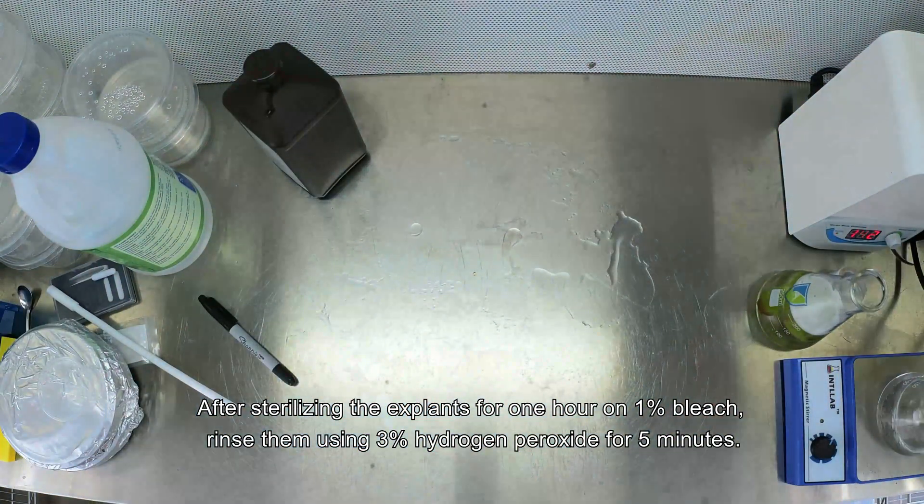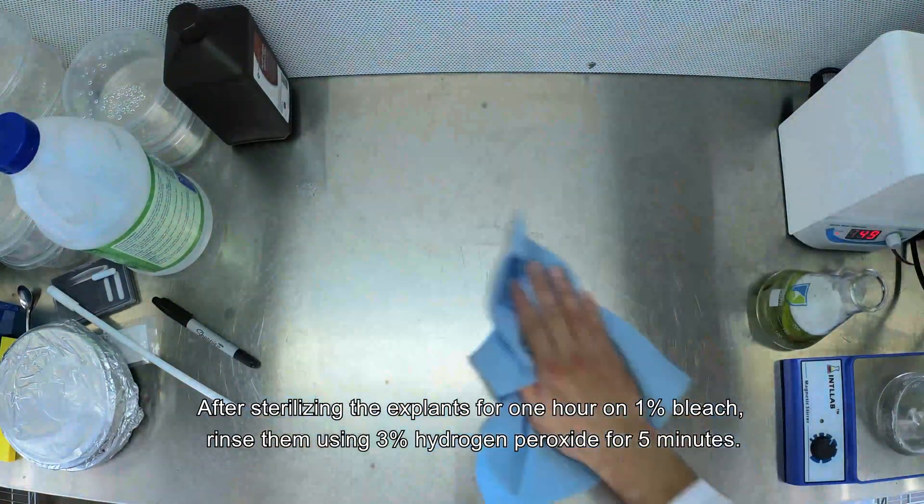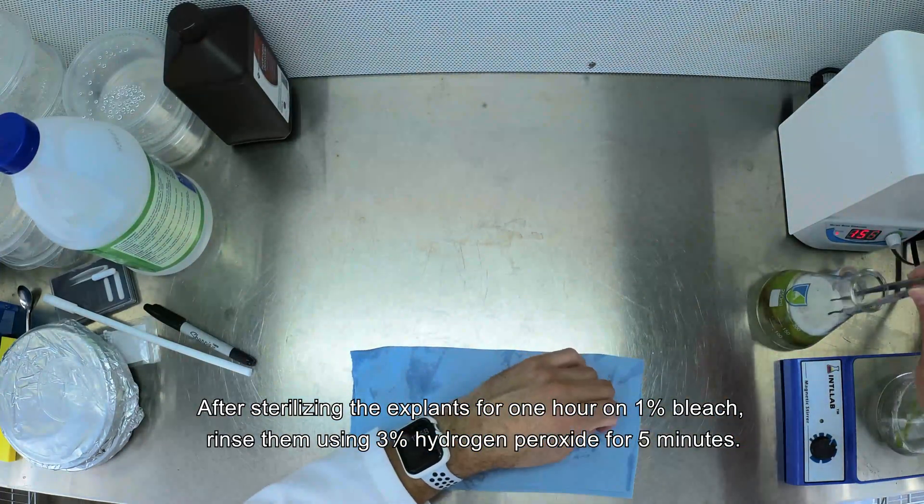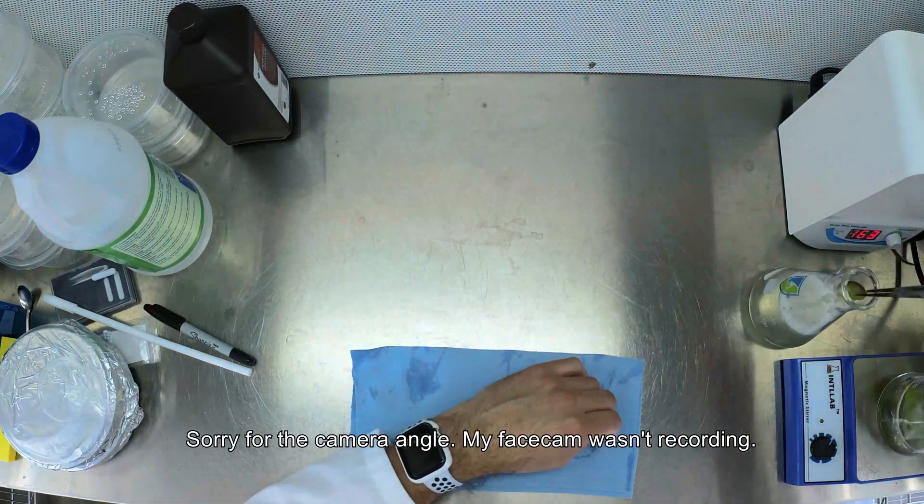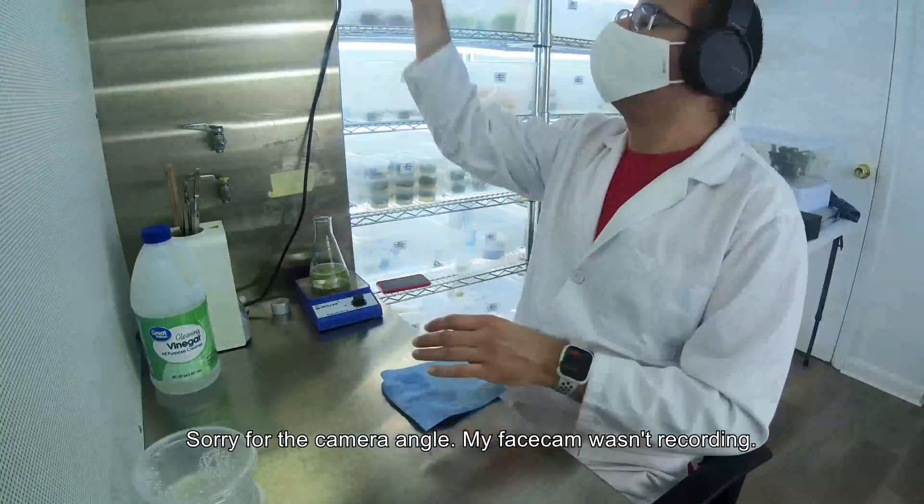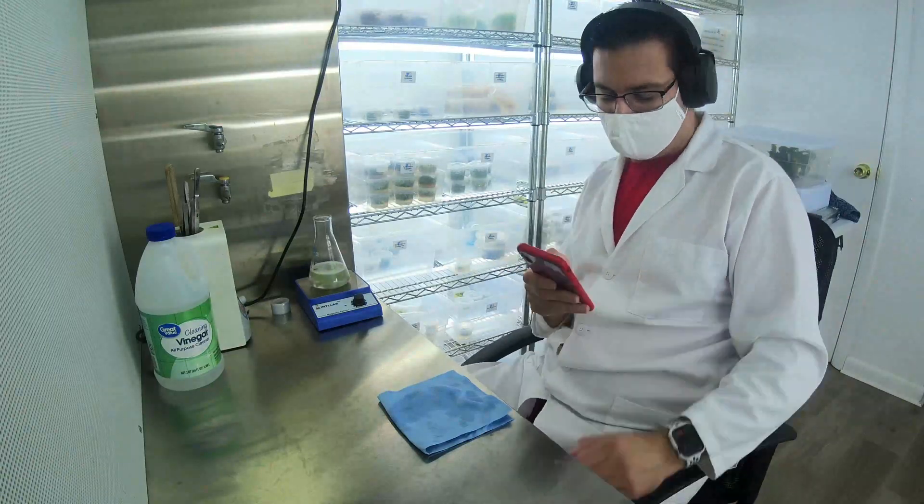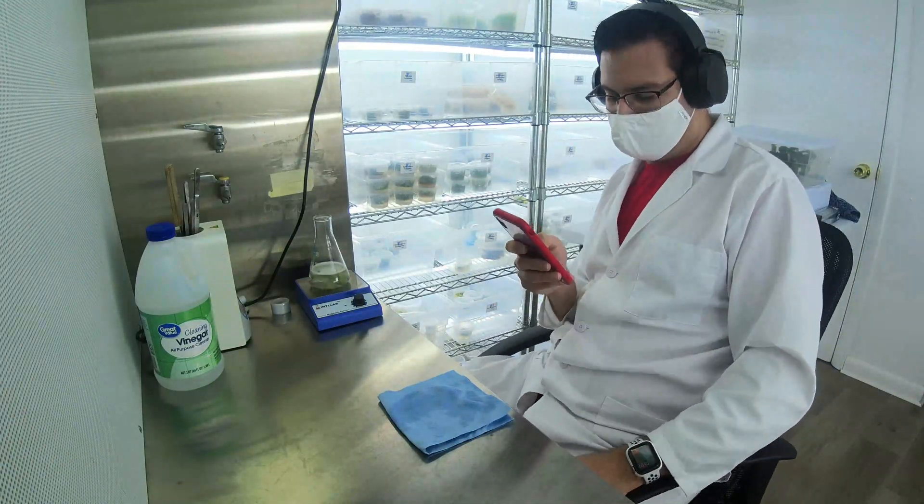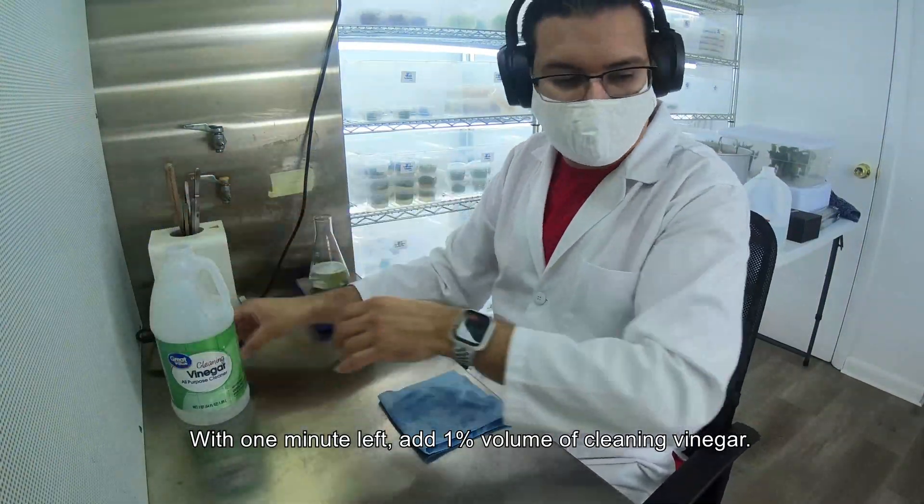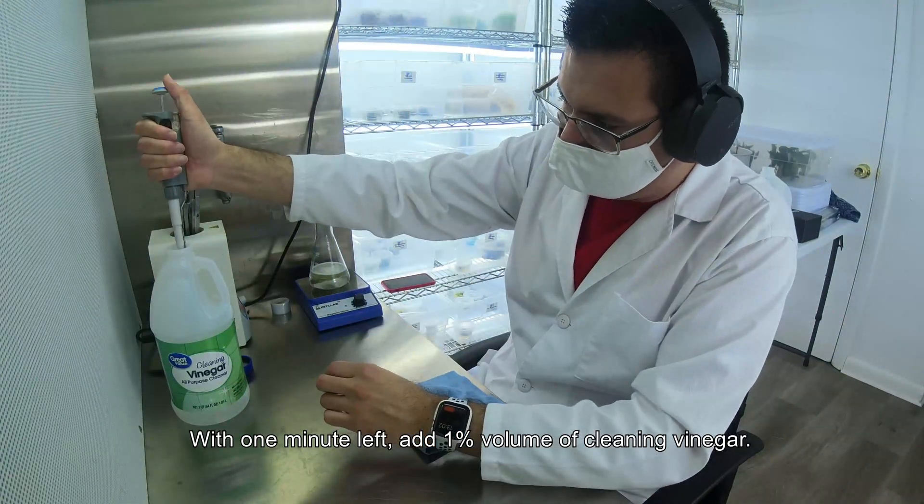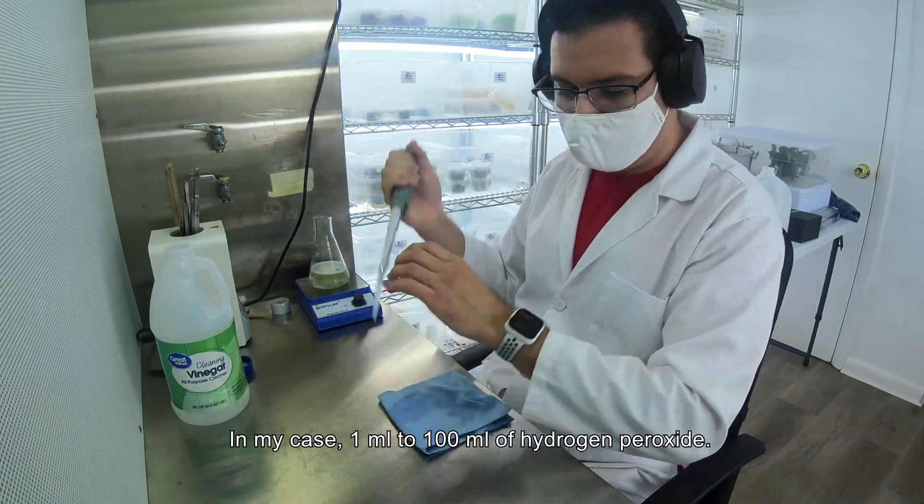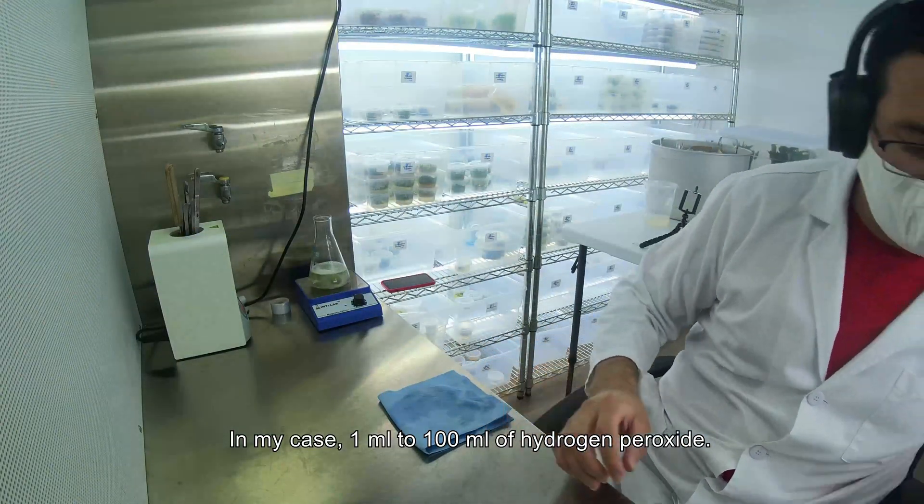After sterilizing the explant for one hour in 1% bleach, rinse using 3% hydrogen peroxide for five minutes. Sorry for the camera angle, my face cam wasn't recording. With one minute left, add 1% volume of cleaning vinegar. In my case, 1 ml to 100 ml of hydrogen peroxide.